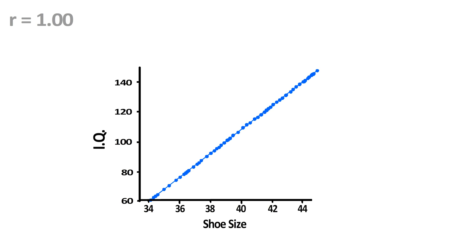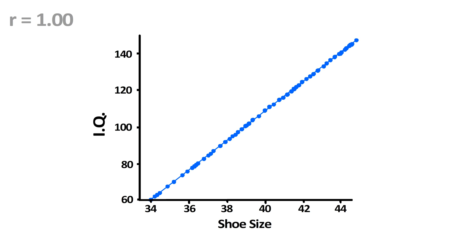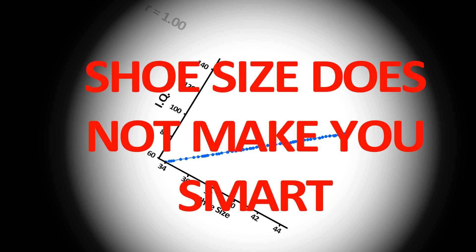Moving on, a correlation of one would look something like this. In this alternate universe, you can predict someone's IQ with 100% accuracy from their shoe size. This data is also made up, by the way.